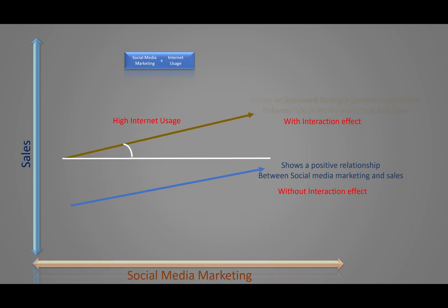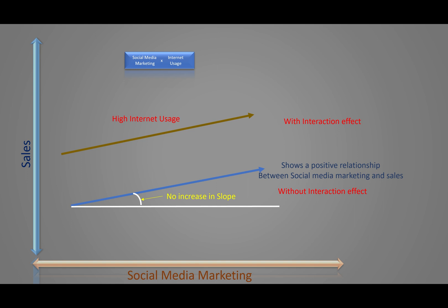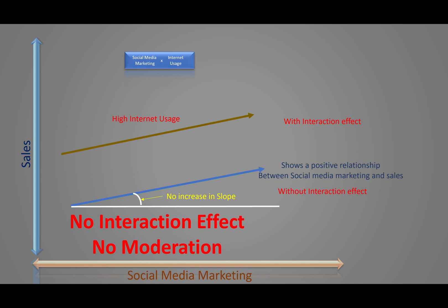In another case, after introducing the interaction effect, if the relationship between social media marketing and sales remains the same — meaning with high internet usage there is no increase in the relationship — the slope of the line stays the same. In that case we can say there is no interaction effect, and we can establish that internet usage does not moderate the relationship between social media marketing and sales.